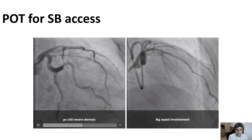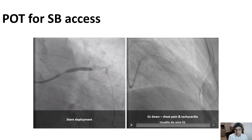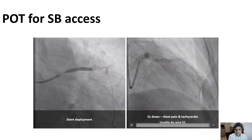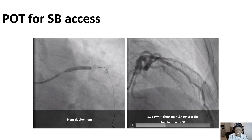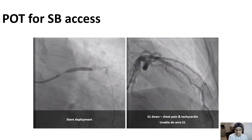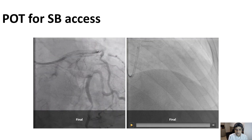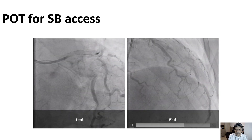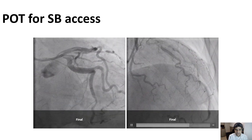This patient had a proximal LAD severe stenosis with a big septal involvement, and after the main vessel stenting, the first septal went down. The patient started complaining of chest pain and tachycardia, and we were not able to wire the first septal. We decided to perform the POT maneuver just close to the septal that went down, and after this maneuver, we could recover the septal flow, re-access, and perform balloon angioplasty, and we got this nice result.